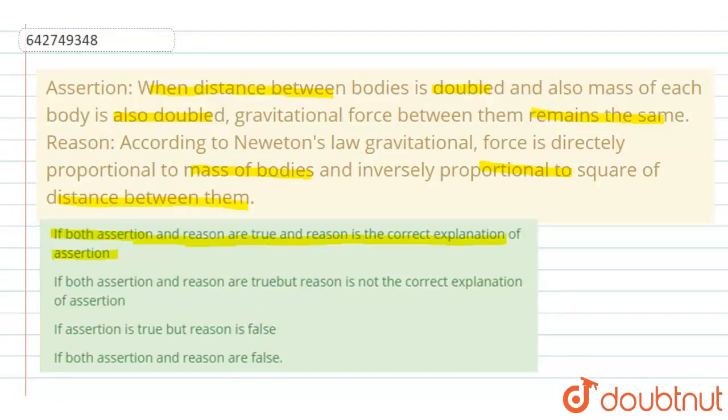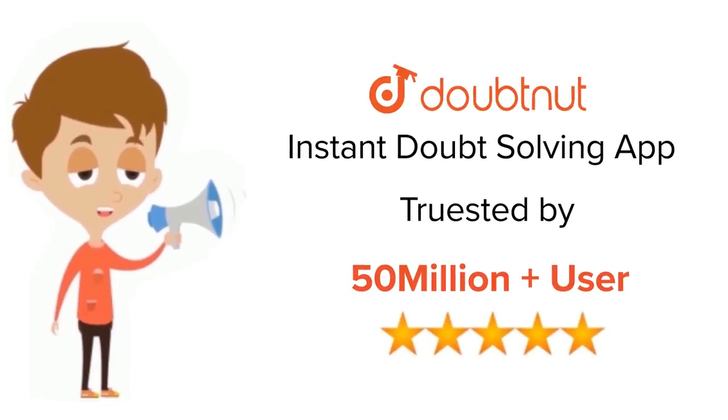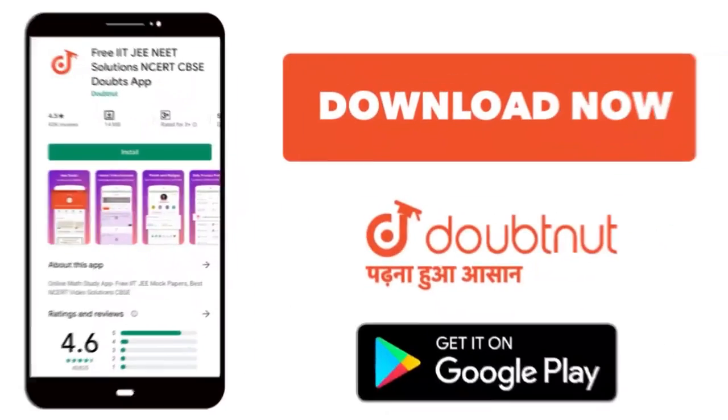So, answer will be option A. Alright, this was the explanation. Hope you understood it. Bye-bye. For Class 6 to 12, IIT-JEE and NEET Level, trusted by more than 5 crore students. Download Doubtnit app today.